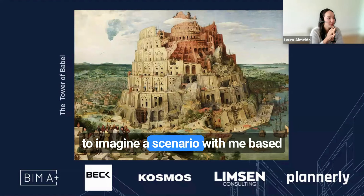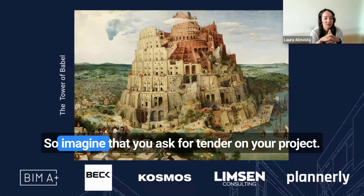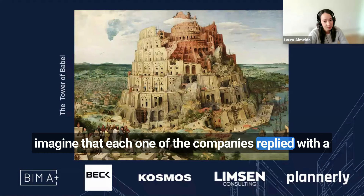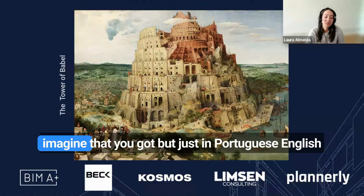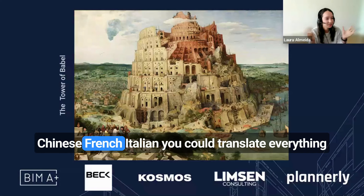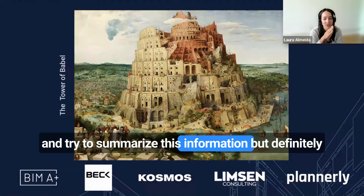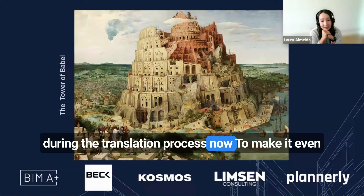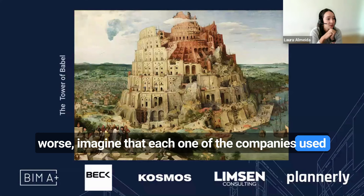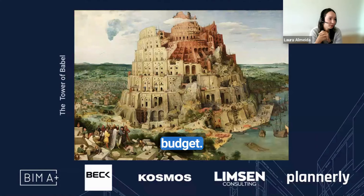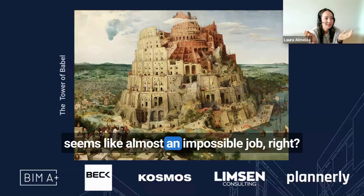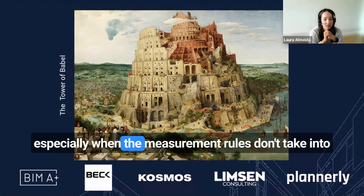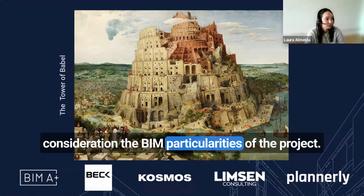Imagine a scenario based on the Tower of Babel: you ask for tender on your project, and each one of the companies replies with a budget in a different language — Portuguese, English, Chinese, French, Italian. You could translate everything, but some part of it would get lost. Now imagine each company also used different rules to calculate the quantities. Understanding and summarizing all this information seems like almost an impossible job. This is an exaggeration of a problem many companies face today, especially when measurement rules don't consider the BIM particularities of the project.